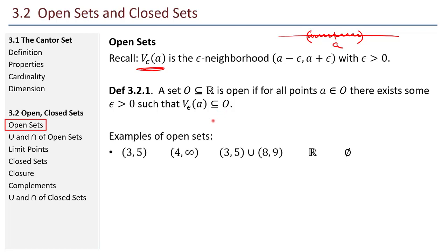Here are some open sets: the interval from 3 to 5 not containing the endpoints; the infinite interval starting at 4 going to infinity not containing 4; the open interval from 3 to 5 union the open interval from 8 to 9; the entire set of all real numbers; and even the empty set — that's an open set.